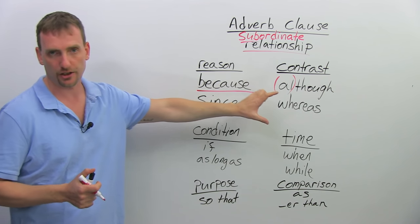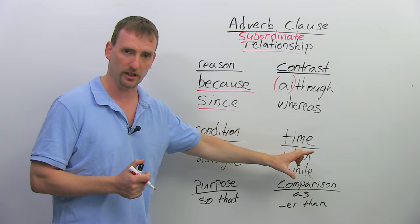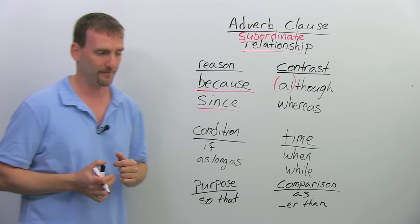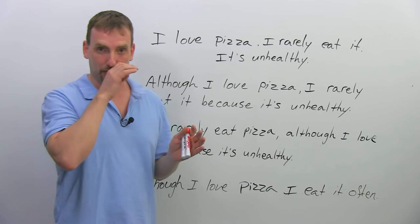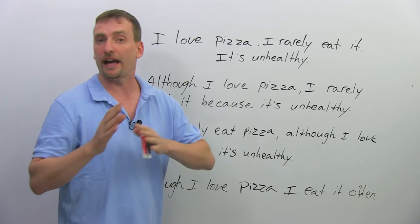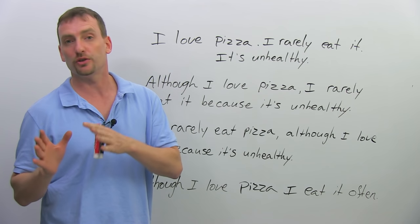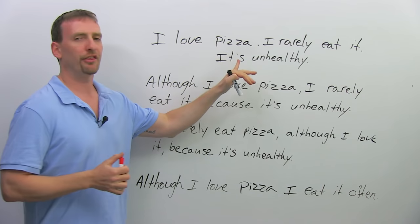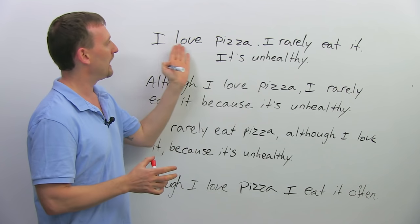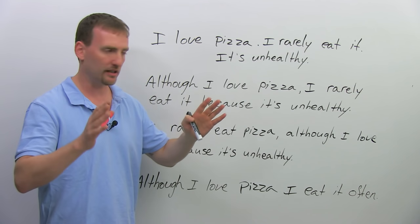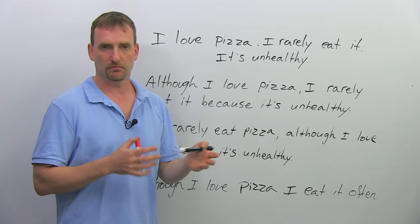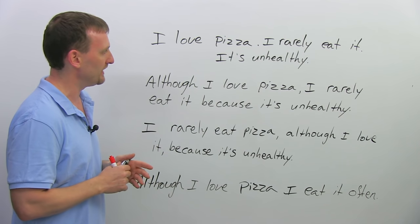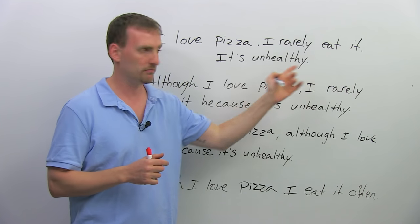Now that we've seen some relationships and conjunctions, let's look at some sentence examples. I'm going to show you some dos and don'ts — things you should do, things you should not do, though everything has an exception. Let's look at three independent clauses: "I love pizza." "I rarely eat it" — I almost never eat pizza. "It's unhealthy" — it being pizza.